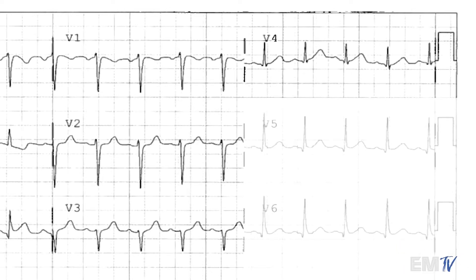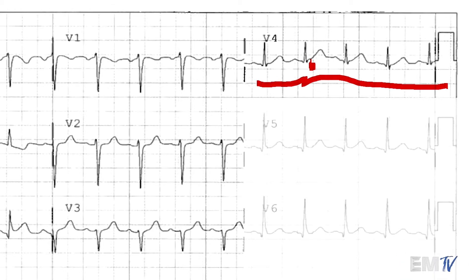Now if you look at V4, there may appear to be some elevation, but this is likely due to patient motion — the entire isoelectric line curves upward and downward as if the patient were breathing. That is not a reliable indicator of ST segment elevation. You cannot call an ST segment elevation MI in one lead; you have to have two contiguous leads showing ST segment elevation.